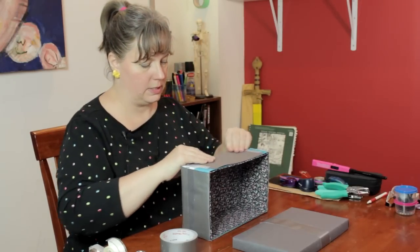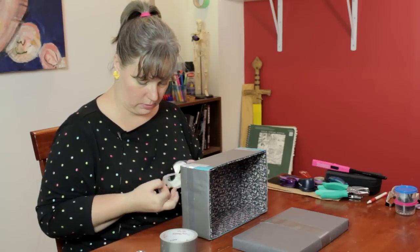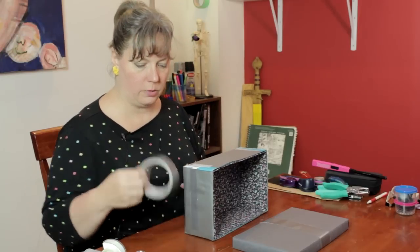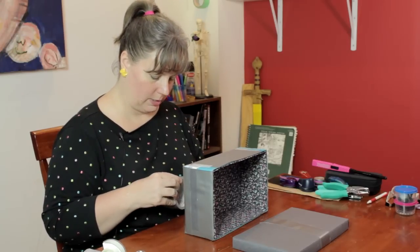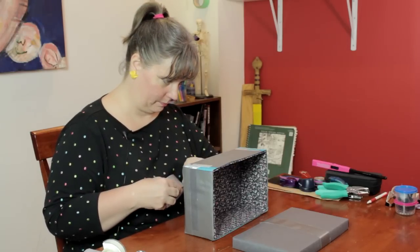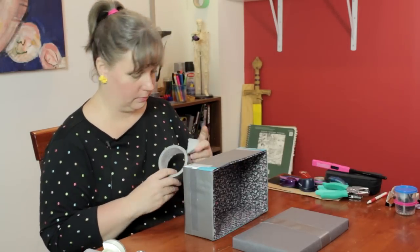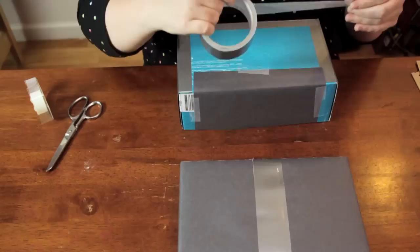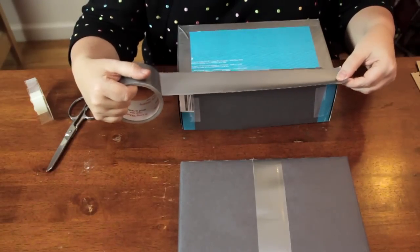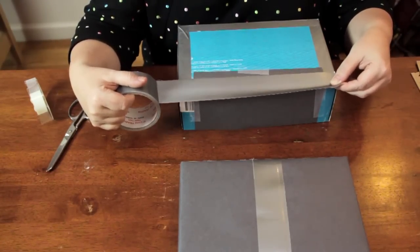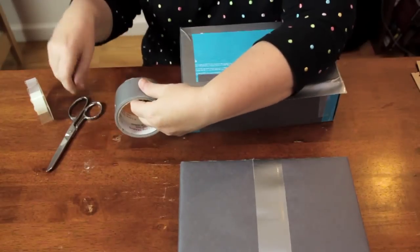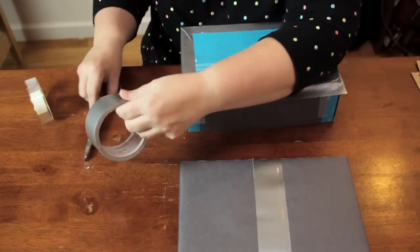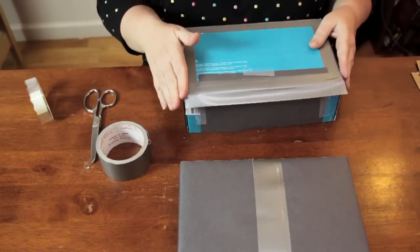I'm going to bend it down and secure it to the bottom as well. Now I'm going to take my duct tape, I'm going to put it across here and trim it off with my scissors. Ripping it doesn't give as clean of an edge, I suggest cutting it with scissors.